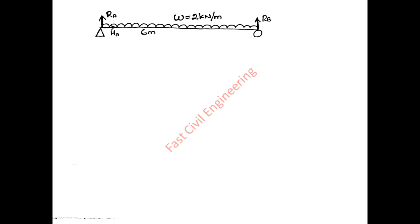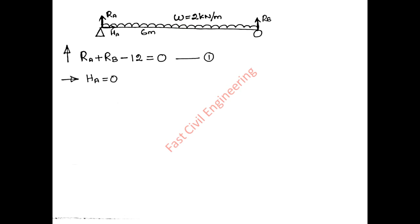Example 2: A simply supported beam with a UDL of 2 kN per meter over a 6-meter span. Find support reactions RA, HA, and RB. First equilibrium equation: summation of vertical forces equals zero, considering upward direction as positive. RA upward, RB upward, and the total UDL force is 6 into 2 equals 12 kN acting downward, so minus 12. HA equals zero directly.